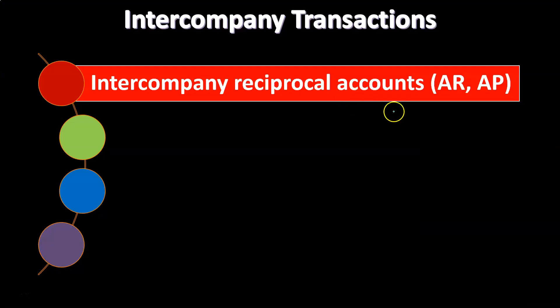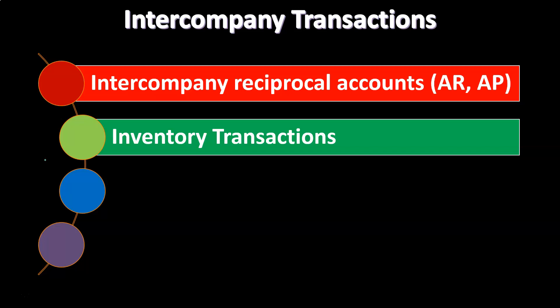Hopefully, in the accounts receivable subledger, we would show that it was an intercompany sale by who was owing us money, and the subledger for AP would show who money is owed to, and we could reverse that out.